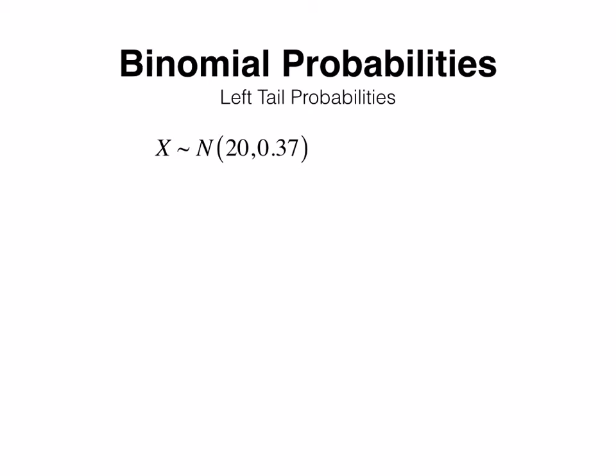So suppose you're interested in left tail probability for a binomial. I have this binomial with n equals 20, pi equals 0.37, and I'm specifically interested in the probability that X is less than 13.